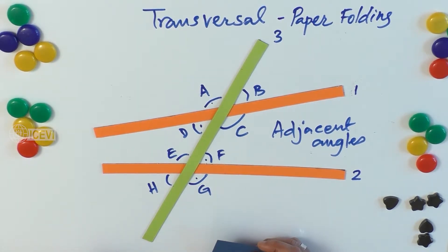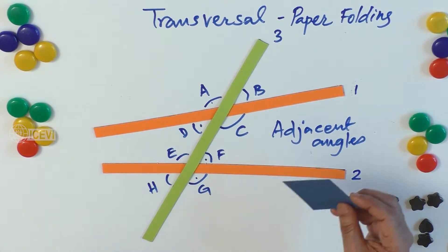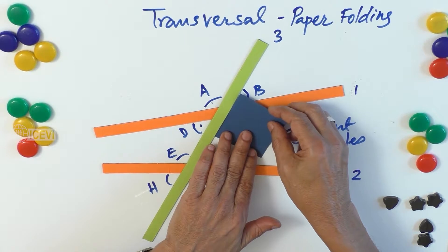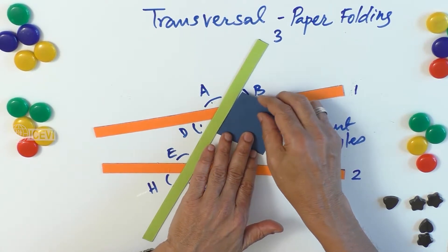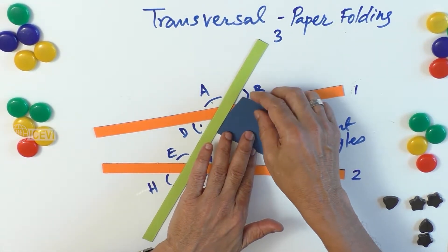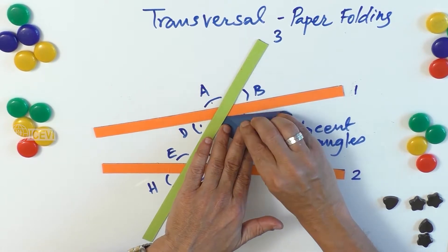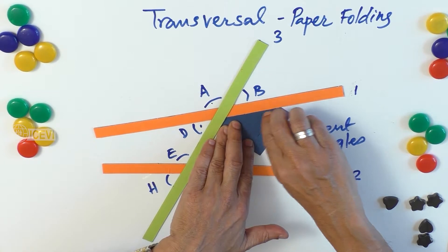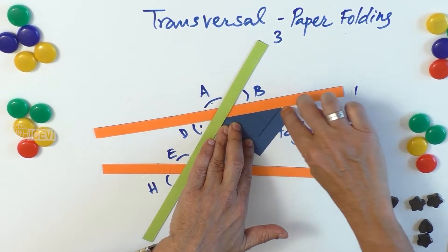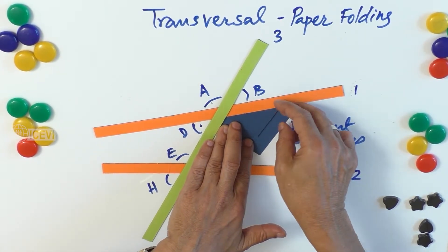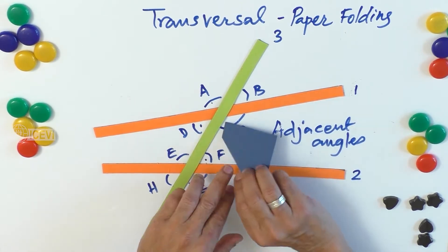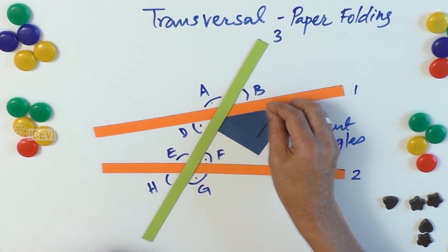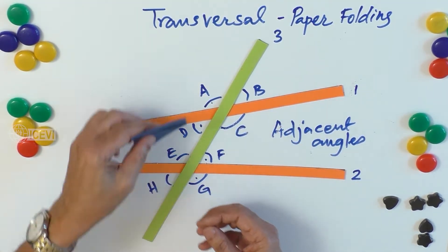Let us take the paper strip and place it on line 3, which is the transversal, and then fold it below line 1. That means you have angle C, and now we have to prove that this is equal to angle A.